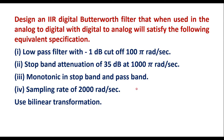In this video, I will consider one numerical on design of digital filter. Design an IIR digital Butterworth filter that, when used in the analog-to-digital with digital-to-analog system, will satisfy the following equivalent specifications: low pass filter with minus 1 dB cutoff at 100π radians per second, stopband attenuation of 35 dB at 1000π radians per second, monotonic in stopband and passband, sampling rate of 2000 radians per second. We are supposed to use bilinear transformation.